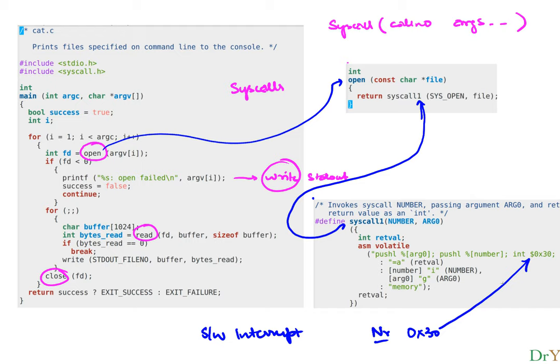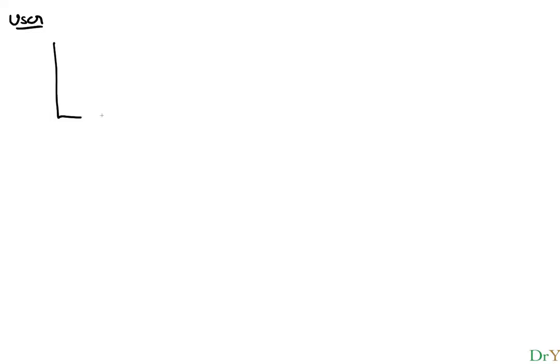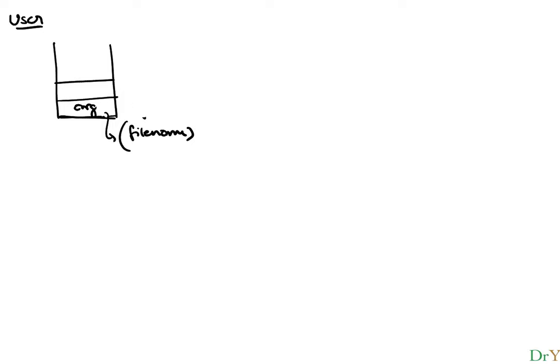What the user is really doing is putting things on the stack. It pushes the call number first — that's arg0 — then the argument, which in the case of an open system call is the file name. Then it raises an interrupt. So at this point the user has put the call number and the file name argument on the stack.